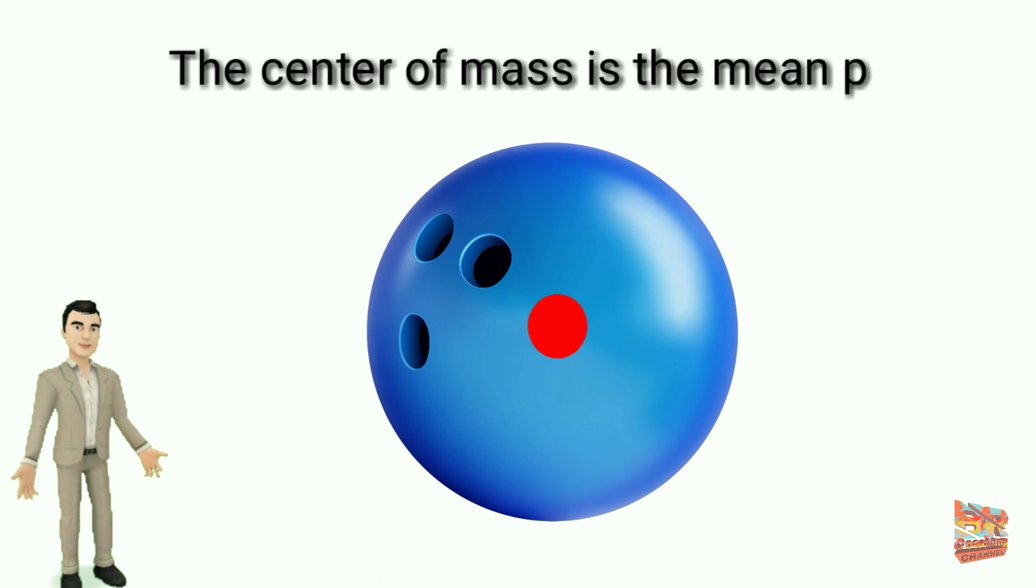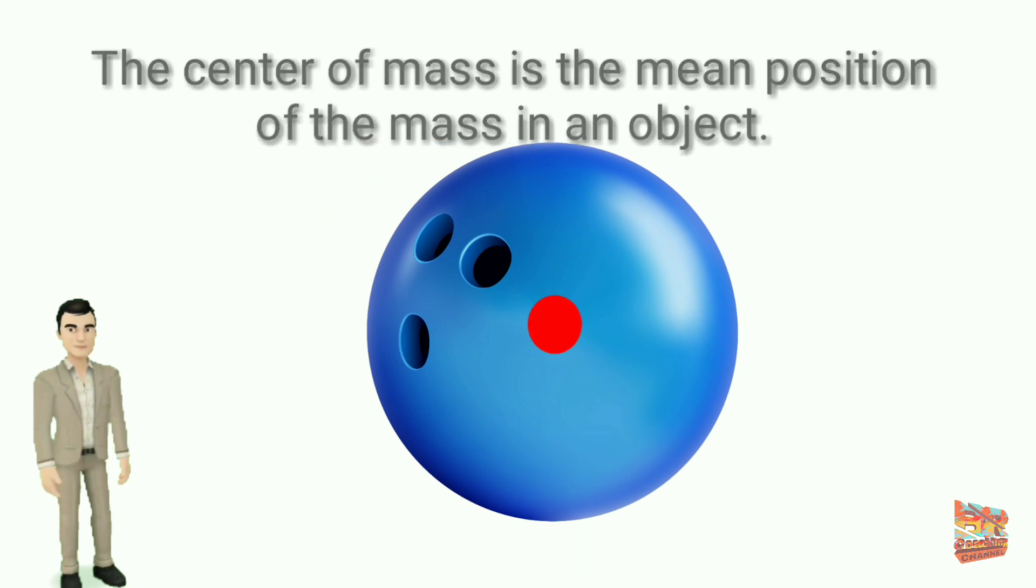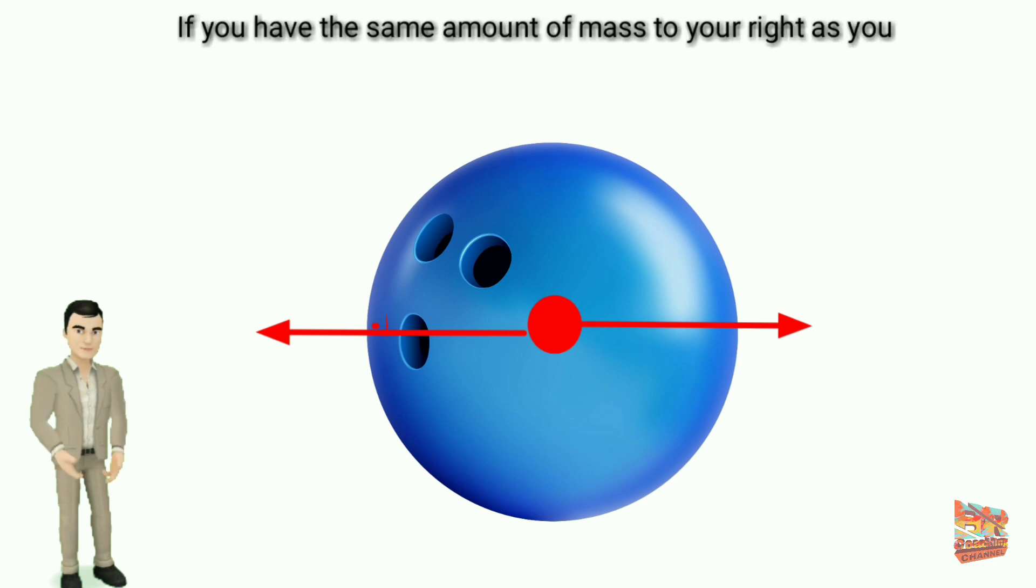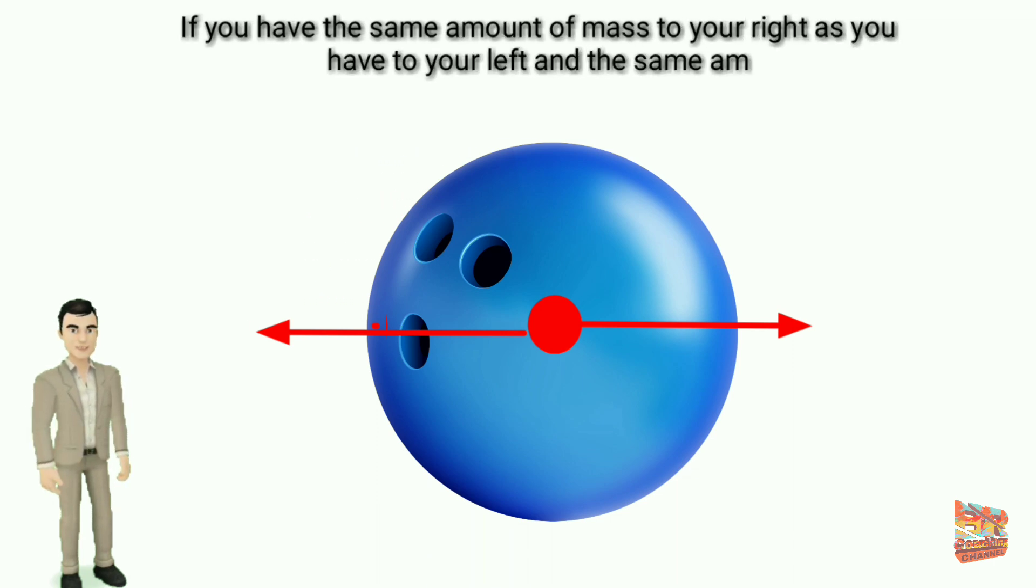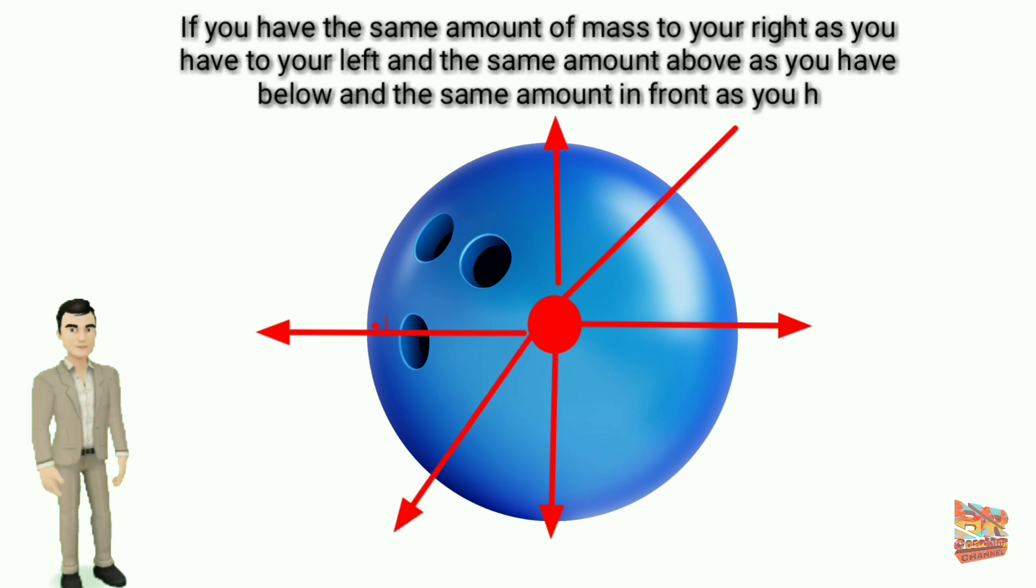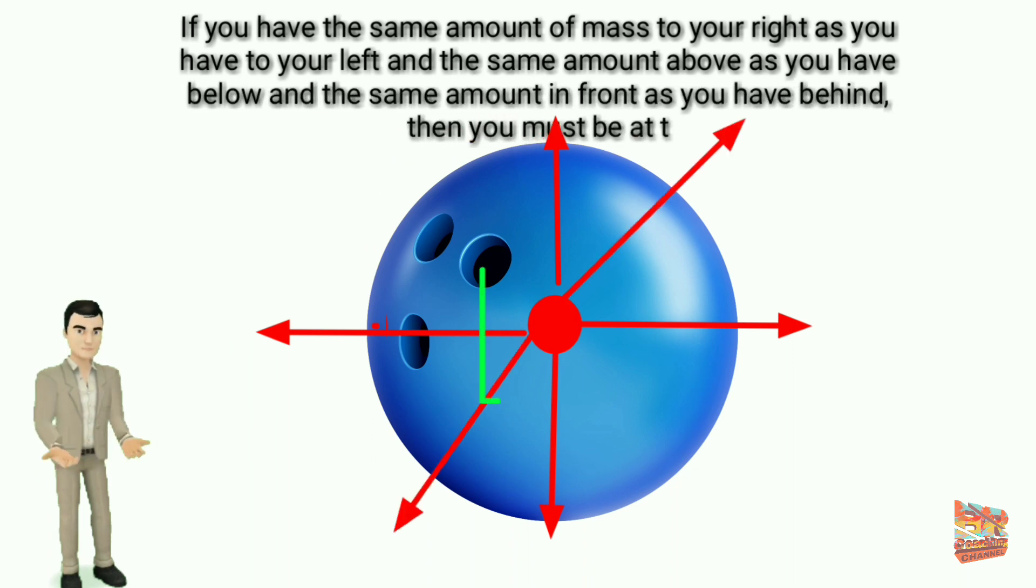The center of mass is the mean position of the mass in an object. If you have the same amount of mass to your right as you have to your left, and the same amount above as you have below, and the same amount in front as you have behind, then you must be at the center of mass.